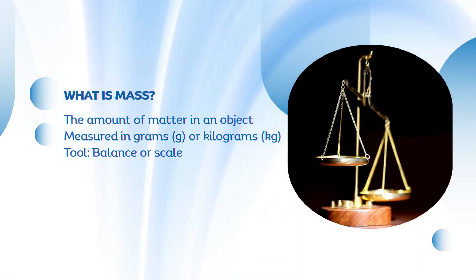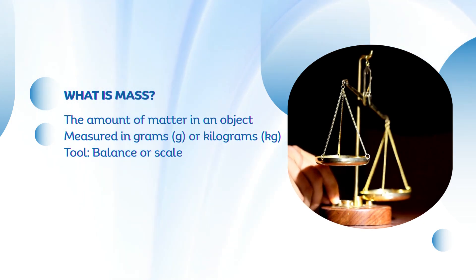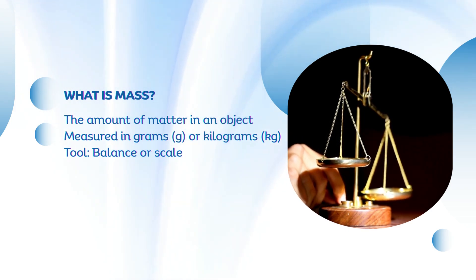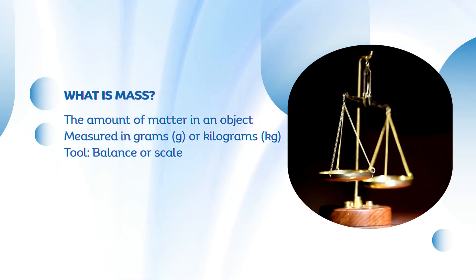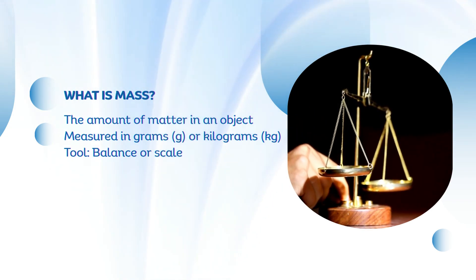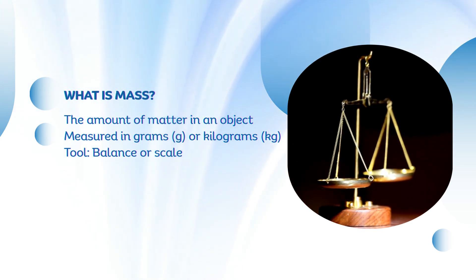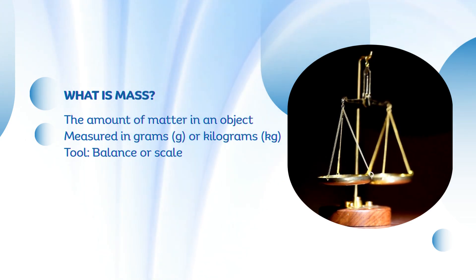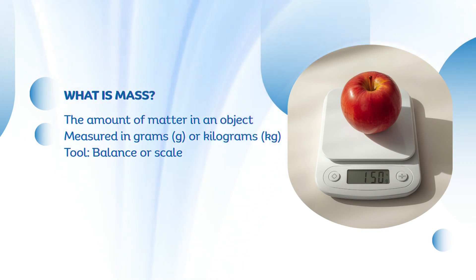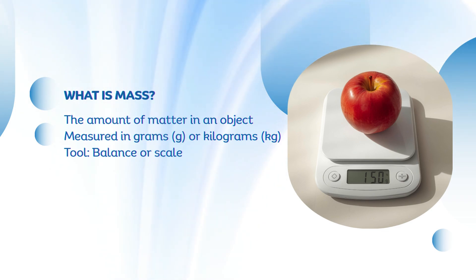Mass is the amount of matter, or stuff, inside an object. It doesn't change no matter where you are, even on another planet. We measure mass using a balance or a scale. For example, if you place a rock on one side of a balance and metal weights on the other, the balance shows when both sides are equal — that tells you the mass of the rock. Digital scales work the same way, by comparing the downward pull of gravity on the object to a known standard. So when we say an apple has a mass of 150 grams, that means the apple contains 150 grams worth of matter.